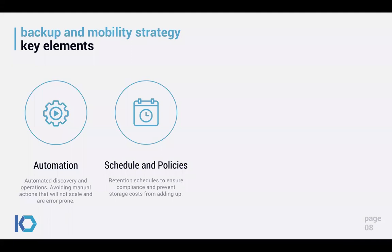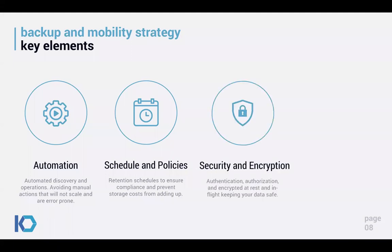The second key element is a policy-based, declarative approach rather than configuring static jobs. This ensures you're covered today and going forward, can flag where you are and aren't covered, and gives flexibility to control how much data you keep and for how long. Costs can really add up when snapshotting volumes or databases 24 hours a day, 365 days a year.